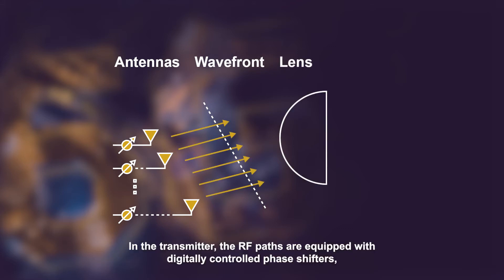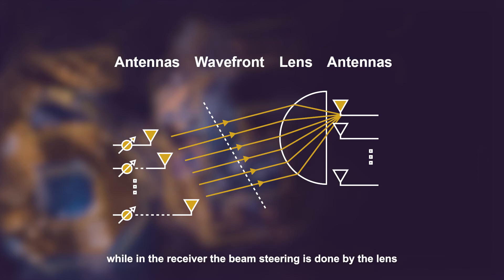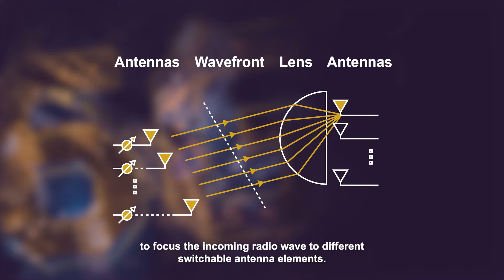In the transmitter, the RF paths are equipped with digitally controlled phase shifters, while in the receiver the beam steering is done by the lens that focuses the incoming radio wave to different switchable antenna elements.